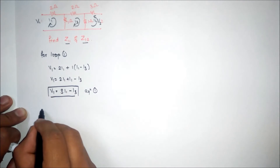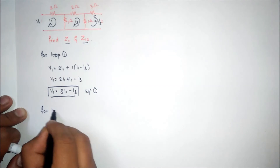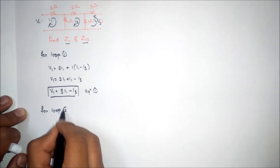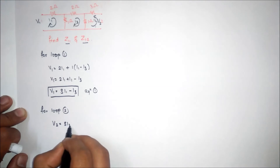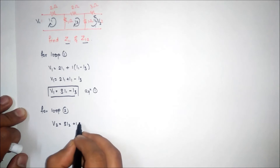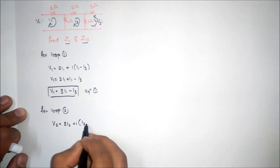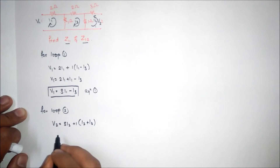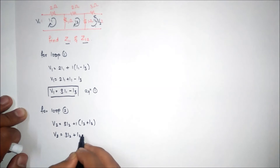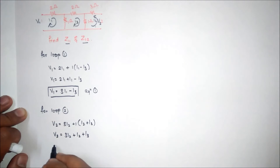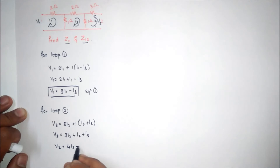For loop 2, we get v2 is equal to 3i2 plus 1(i2 plus i3), which simplifies to v2 equals 3i2 plus i2 plus i3. Therefore, v2 equals 4i2 plus i3.